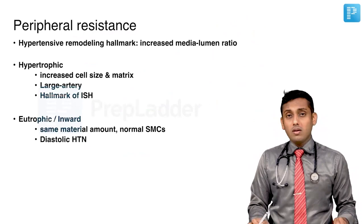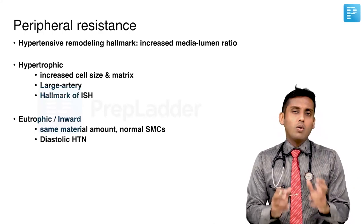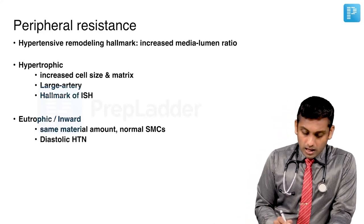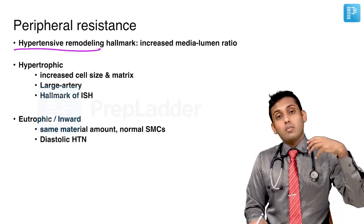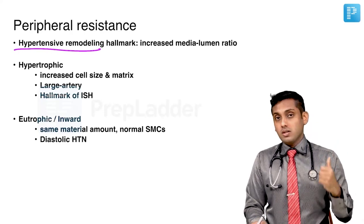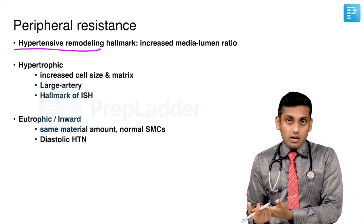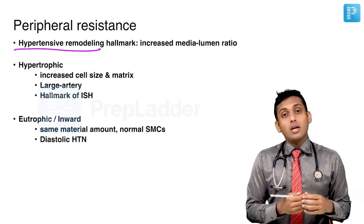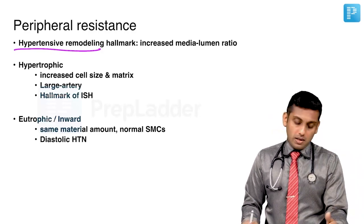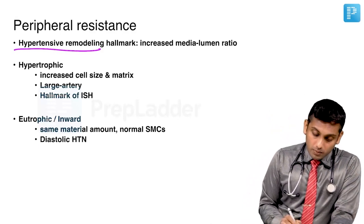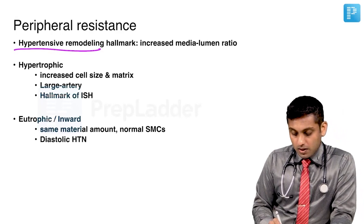Then coming to vascular remodeling — this is an important concept that could definitely be a potential question because it is in both Harrison's and Braunwald. A little more detail is mentioned in Braunwald's. When we talk about remodeling, what comes to mind first is always cardiac remodeling because we talk about it in diastolic dysfunction, hypertensive heart disease, and we see that the LV remodels after a myocardial infarction or due to sustained afterload in aortic stenosis, hypertrophic obstructive cardiomyopathy, sustained hypertension, or coarctation of aorta. But here we are talking about the remodeling of the vessels.